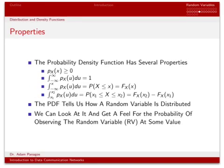The PDF basically tells us how our random variable is distributed. If we plot the PDF, we can get a feel for the likelihood that our random variable will take on some value when we do an experiment. Anywhere the PDF has a large value, there is a high likelihood of the random variable being at that value. Anywhere the PDF has a small value, there is a small probability that the random variable will take on that value.